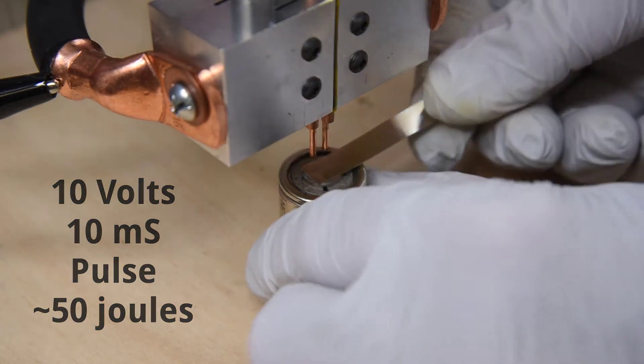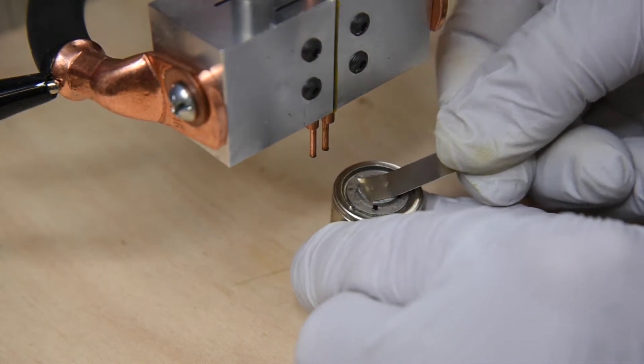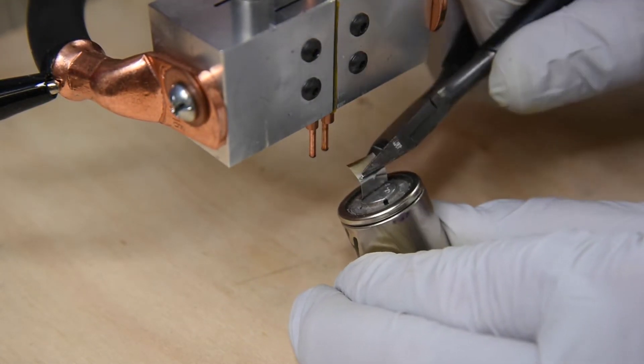50 joules is when we start getting two very small nuggets, and I would not trust this weld to handle much current at all.